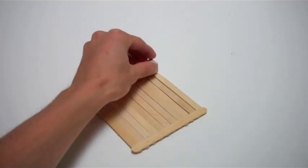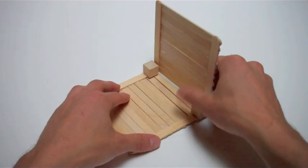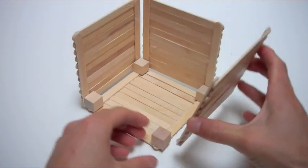Next, glue wooden craft cubes into the corners. Use these to attach three sides and the bottom of the box together, like this.